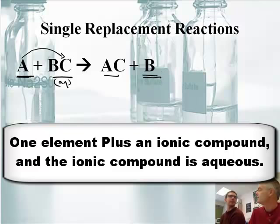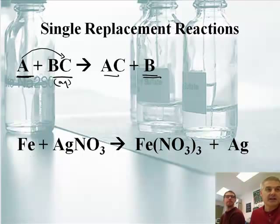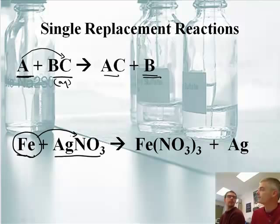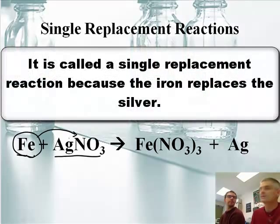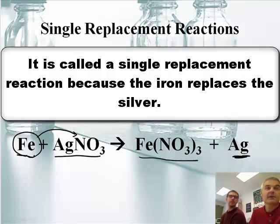We'll use an analogy — there's a life lesson in here. Here's an example: if I take iron and react it with silver nitrate, the iron says it likes nitrate better than silver. So iron kicks silver out, connects with the nitrate, and the silver gets kicked out. That's how it works.